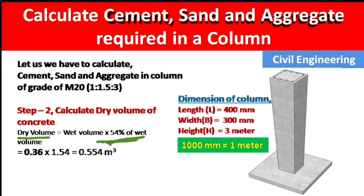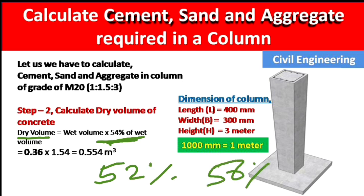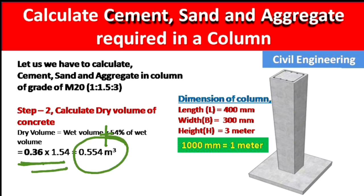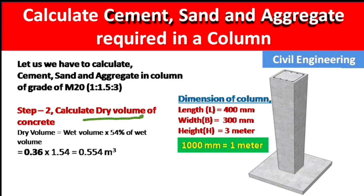In Step 2, we calculate the dry volume of concrete. To convert wet volume to dry volume, we add 52% to 56% extra — I have taken 54% here. So dry volume = wet volume + 54% of wet volume = 0.36 + 0.54 × 0.36 = 0.554 m³. In Step 1 we calculated wet volume, and in Step 2 we calculated the dry volume.